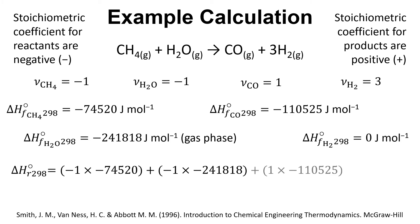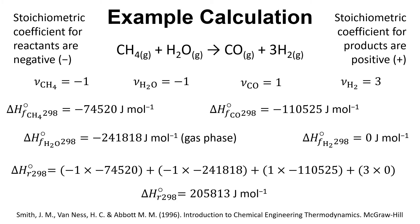We add the values for water, the values for carbon monoxide, and the values for hydrogen. Working all of this out, we get the delta H — the enthalpy change of reaction for methane reacting with water in steam reforming — and it comes to 205,813 joules per mole, calculated from values we look up in tables.